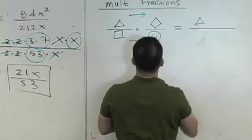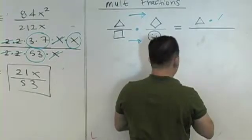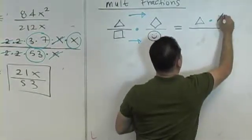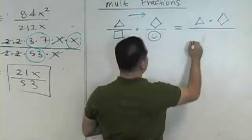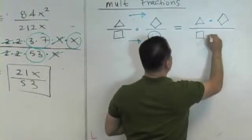So this will be triangle times your what? Diamond. Okay? Over the square times your happy face.